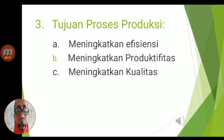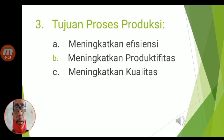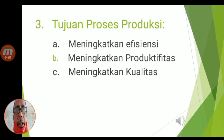Berikutnya, tujuan proses produksi. Tujuannya ada tiga: yang pertama meningkatkan efisiensi, yang kedua meningkatkan produktivitas, yang ketiga meningkatkan kualitas. Ini merupakan tujuan proses produksi.